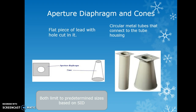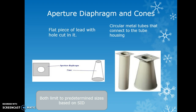An aperture diaphragm is a flat piece of lead with a hole cut in it. Cones are circular metal tubes that attach to the tube housing and produce circular collimation. Based on the SID, the opening will be larger or smaller depending on the distance from the patient. These are used for head work such as sinuses, nasal bones, and TMJs, but are not commonly seen today.